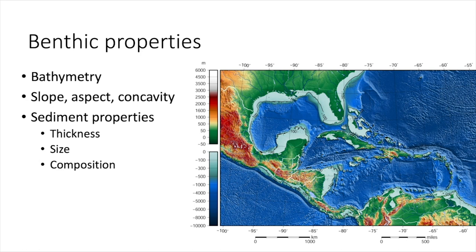You can also measure benthic properties, so things like bathymetry. Here we have a bathymetry map of the Gulf of Mexico and the Caribbean Sea. In addition to just bathymetry, so just how deep the ocean is from the surface at a particular point, you can also look at slope, aspect, and concavity, which are all features of how the ocean floor is shaped. So how steep is the slope? You can see off the west coast of Mexico, there's a very deep trench aspect. Which way a particular slope is facing? Is it facing south, north, east, or west? And also concavity.